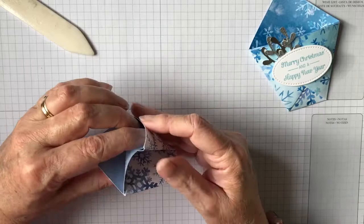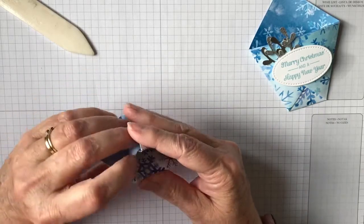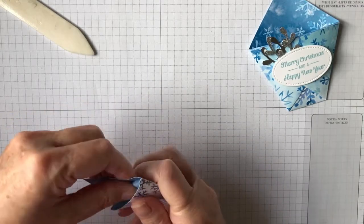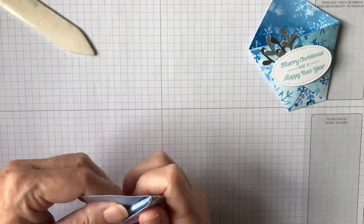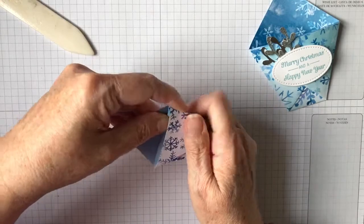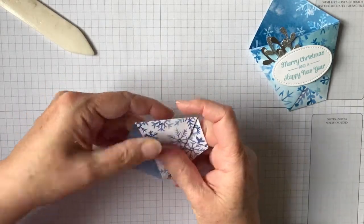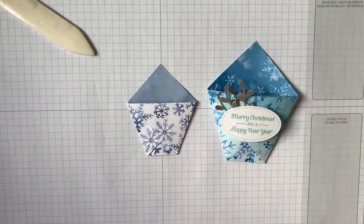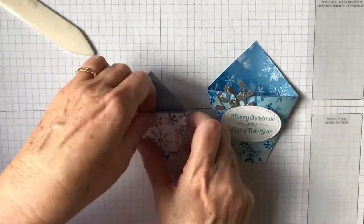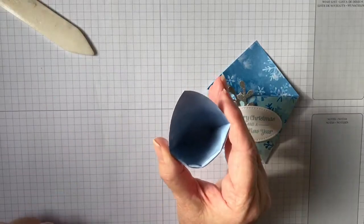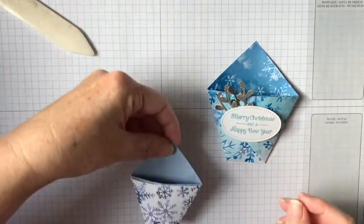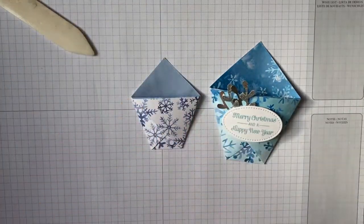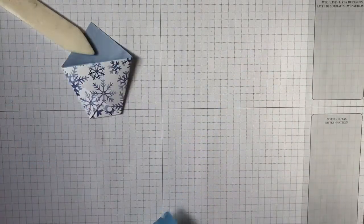Feed it into there. Push it down until you get to the fold mark, and that's it made. All you have left to do then is decorate it. Nice little pocket.